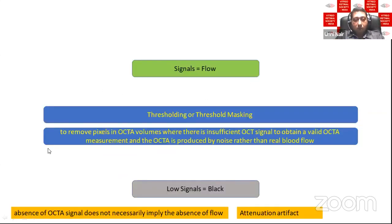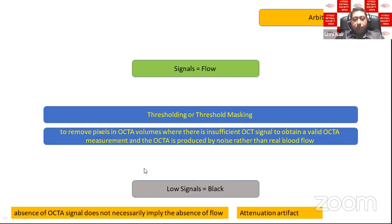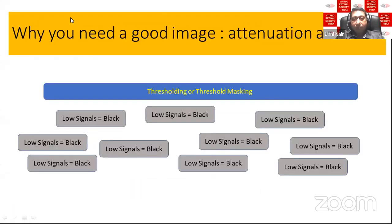Thresholding in OCTA reduces system noise to ensure noise doesn't produce artifactual blood flow. Anything with a low signal is shown as black and anything with a good signal is shown as flow. This threshold is purely arbitrary for each system. Importantly, the absence of an OCTA signal does not imply there is no flow. Too many low signals or black images produce what is called an attenuation artifact.